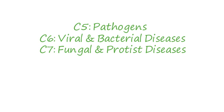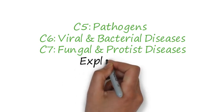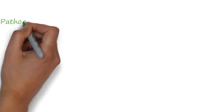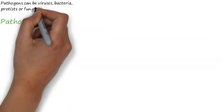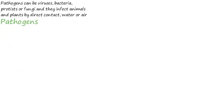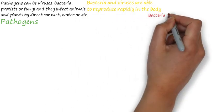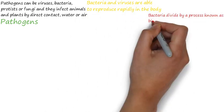Communicable diseases are infectious diseases and can be passed from one person to another. These types of diseases are caused by pathogens, which can be viruses, bacteria, protists, or fungi. These pathogens can infect animals and plants by direct contact, through water, or through the air.